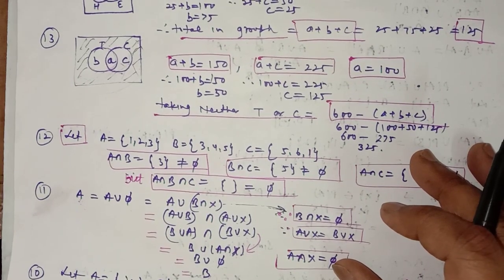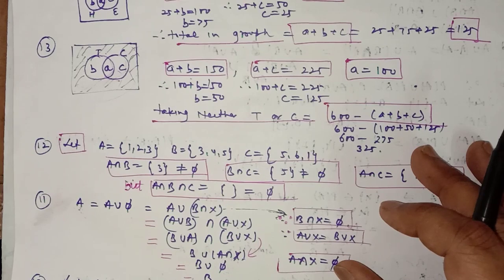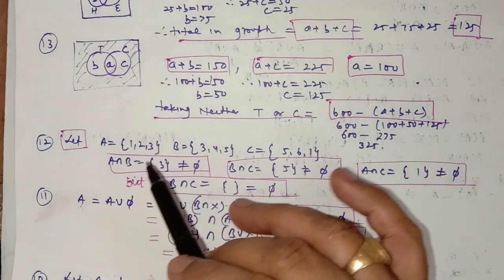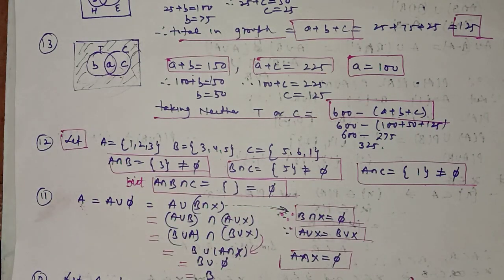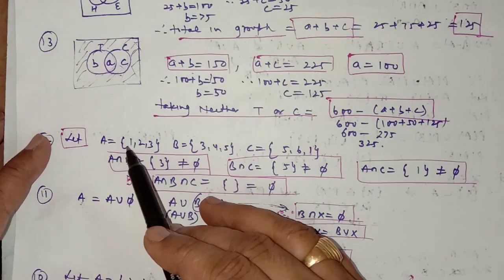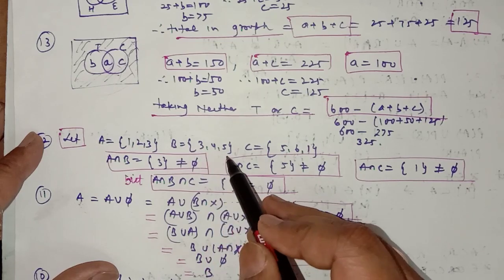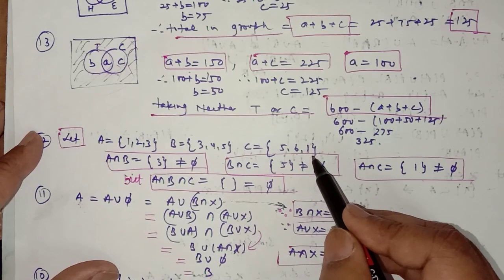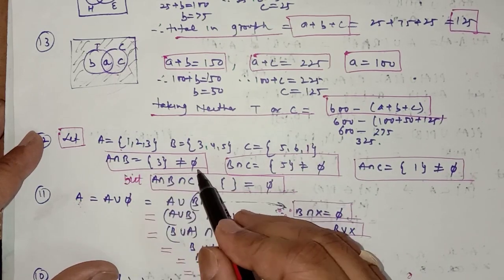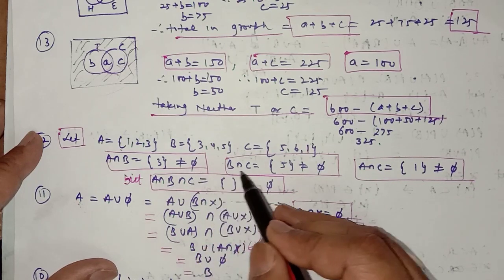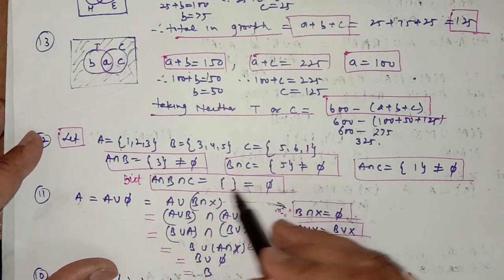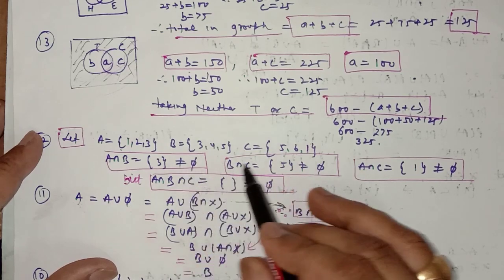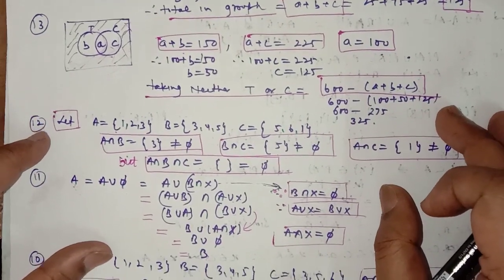In question number 12, find three sets such that A∩B, B∩C, and A∩C are all non-empty, but A∩B∩C is empty. For example: A = {1, 2, 3}, B = {3, 4, 5}, C = {5, 6, 1}. Then A∩B = {3} (not empty), B∩C = {5} (not empty), A∩C = {1} (not empty), but no element is common to all three, so A∩B∩C = ∅. You can take any other example satisfying this condition.